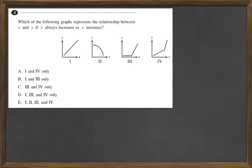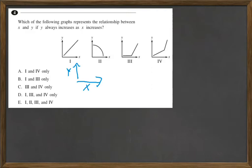Which of the following graphs represents the relationship between x and y if y always increases as x increases? Let's look at the directions: x increases going this direction, and y increases going this direction. We want to see which of these makes the pattern where y always increases as x increases.